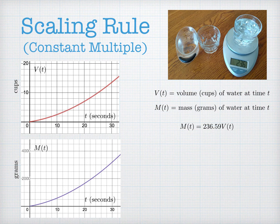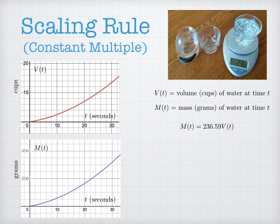So let V(t) be the total volume of water measured in cups, and M(t) be the amount of water measured in mass, or grams. One cup of water weighs 236.59 grams. Consequently, there is a scaling relationship: the total mass of water is just a multiple of the volume. You multiply by the scaling factor, 236.59.